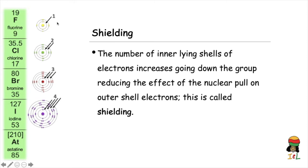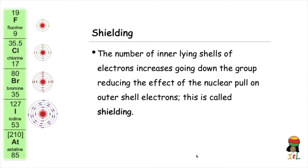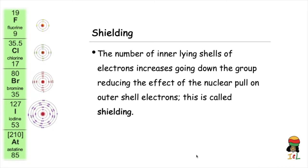The number of inner-lying shells increases as the atoms get larger going down the group. These inner-lying electron shells weaken or shield the nuclear pull for the electrons on the outer shell. The deep red color in the animation is concentrated closer to the nucleus where the nuclear pull is strongest, and the red color fades moving away from the nucleus, showing that inner-lying shells shield or weaken the nuclear pull on the shells further away. Therefore, the more inner-lying shells an atom has, the greater the shielding effect on the nuclear pull for the outer shell electrons.